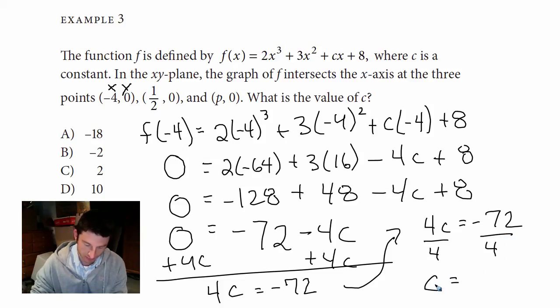-72 divided by 4, and we get -18. Cool. Got nervous there for a second. Didn't see that answer. -18, choice A.